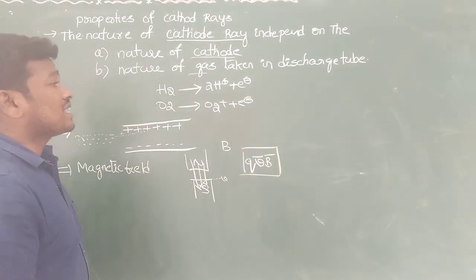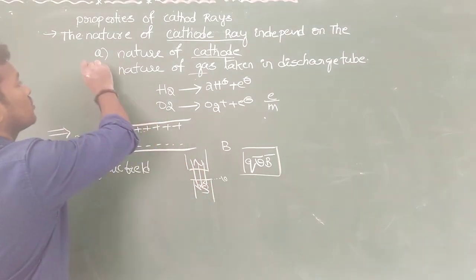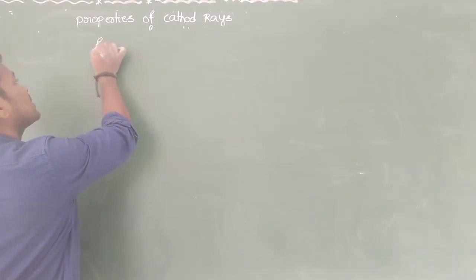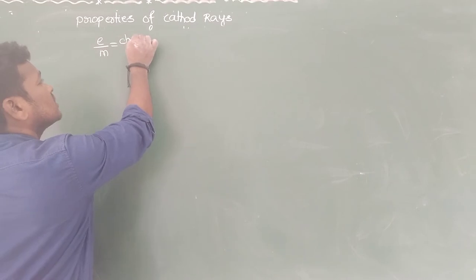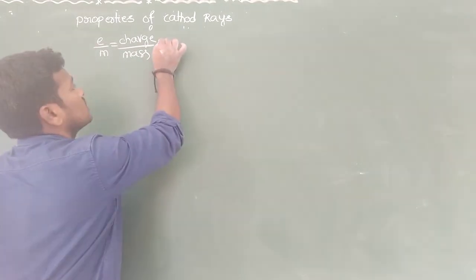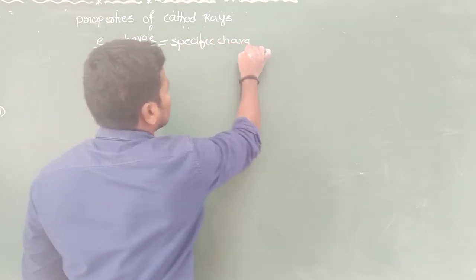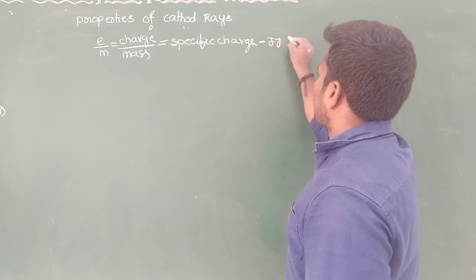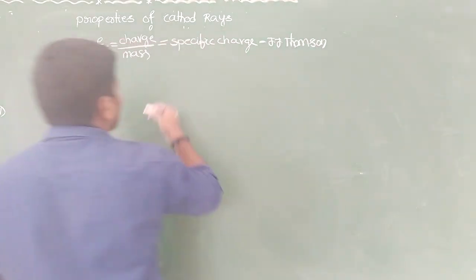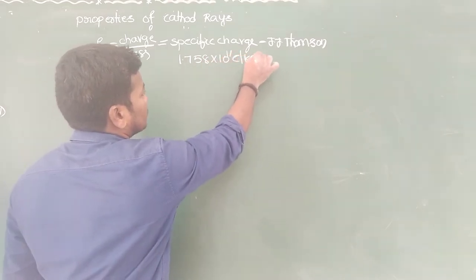The E/M ratio — charge to mass ratio or specific charge — also does not depend on the nature of the cathode or the gas in the discharge tube. J.J. Thomson determined the E/M ratio, where E stands for charge and M stands for mass — the charge to mass ratio of the electron. This is also called the specific charge. J.J. Thomson determined the specific charge of the electron as 1.758 × 10¹¹ coulombs per kg.